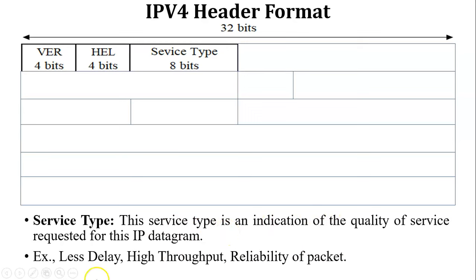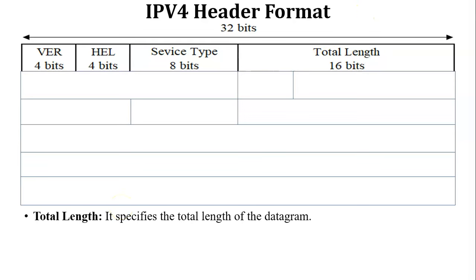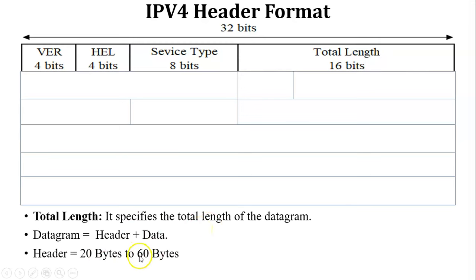The next field is Total Length, which contains 16 bits of data. Total length means the length of the entire datagram, which equals header plus data. The minimum length of the header is 20 bytes and maximum is 60 bytes. The minimum length of data is 20 bytes and maximum is 65,535 bytes. This field stores the total length of the datagram.